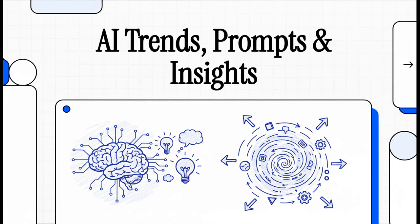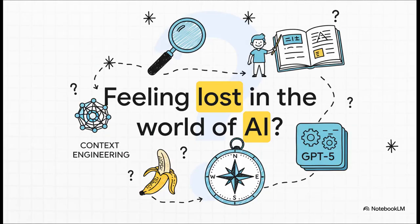Let's be real. The world of AI is moving at lightning speed. Every single day there's a new model, a new technique, some new debate making headlines. Trying to keep up with it all honestly feels like you're trying to drink from a fire hose. And because of that, have you ever felt like a tourist who's just completely lost in this new world?